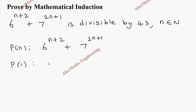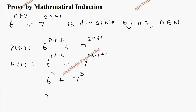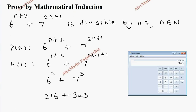Now we are going to find the value of P(1) — it means in the place of n we substitute 1. So 6^(1+2) + 7^(2×1+1), which is 6³ + 7³. The value of 6³ is 6×6×6 = 216, and 7³ = 343.